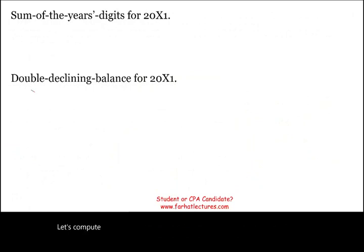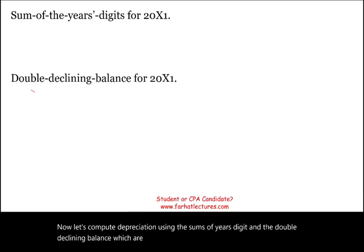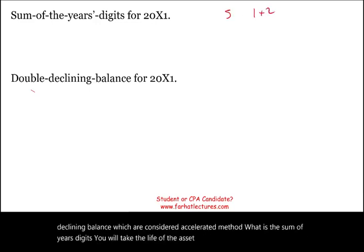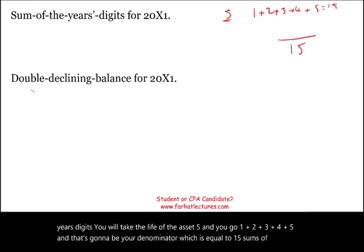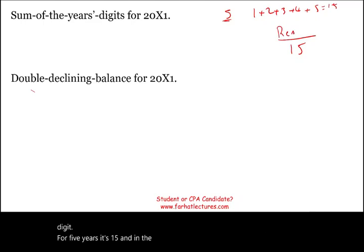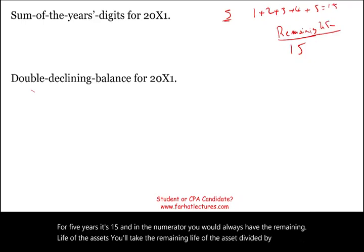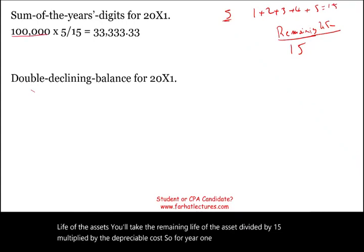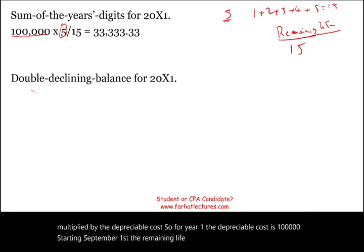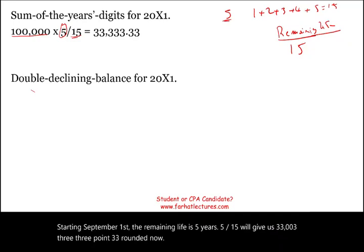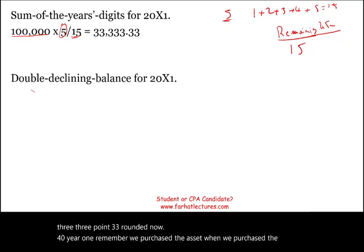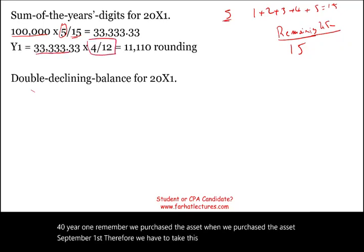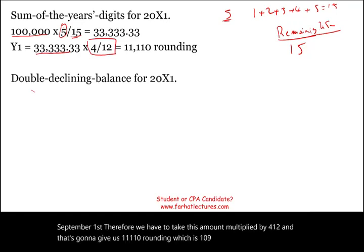The sum-of-years digits (SYD) and double declining balance are accelerated methods. For SYD, add the years of useful life: 1+2+3+4+5 = 15, which is the denominator. The numerator is the remaining life of the asset. For year one, remaining life is 5 years, so 5/15 times $100,000 equals $33,333.33. Since the asset was purchased September 1st, we prorate: $33,333.33 times 4/12 equals $11,110.